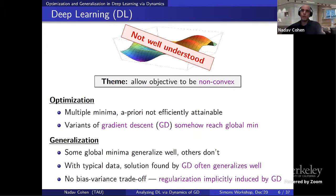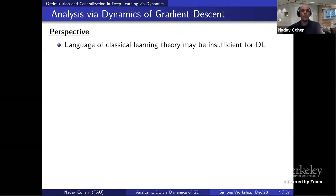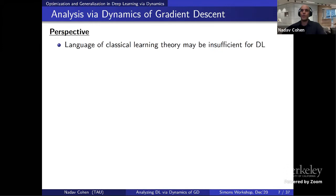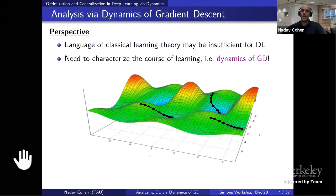Most would agree that we don't really understand these questions sufficiently well. The argument I am trying to make is that maybe the language developed over the years for understanding classical learning theory is just not sufficient for understanding deep learning. In that case, maybe we should look at what goes on during learning — specifically the trajectories, the dynamics of optimization, the dynamics of gradient descent. I will make this case by analyzing deep linear neural networks.